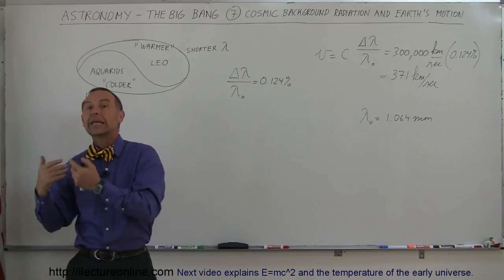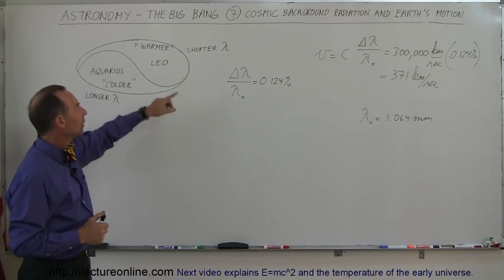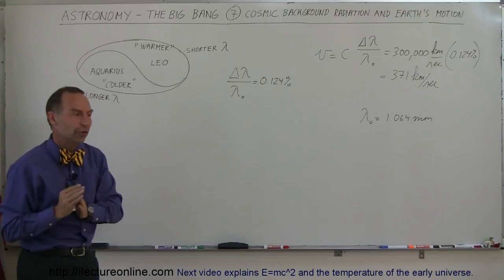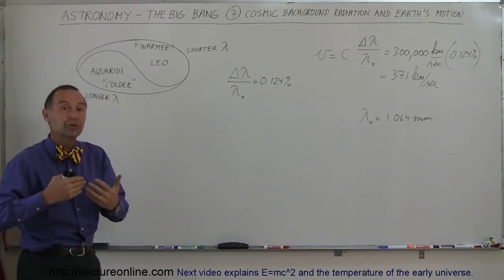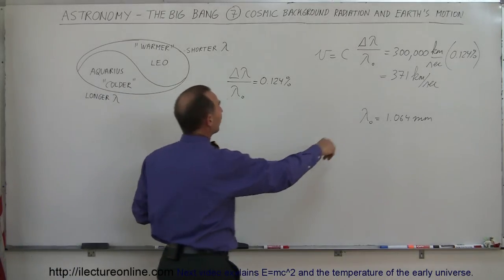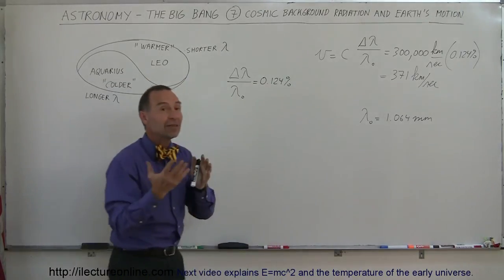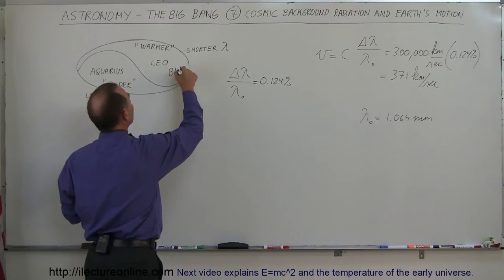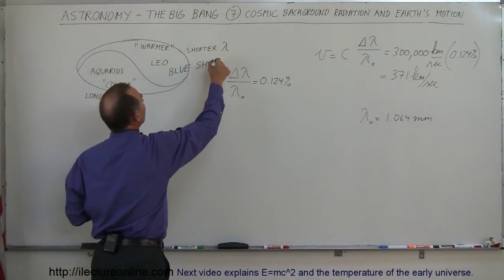Which means if the radiation doesn't look the same by looking at opposite directions of the universe, that means that the earth must be moving at some velocity relative to that radiation, and that's exactly what happens. And it turns out that if we look in the direction of Leo and we see shorter wavelengths, that means it's blue shifted, and blue shifted means that we're moving towards that direction, which means that the earth is moving towards the constellation Leo at 371 kilometers per second.